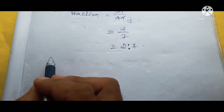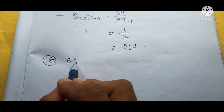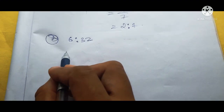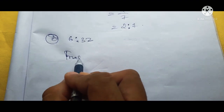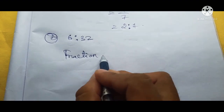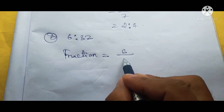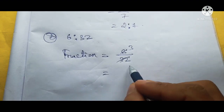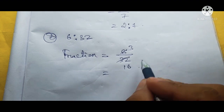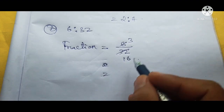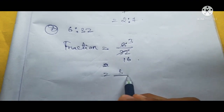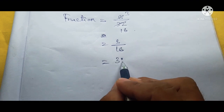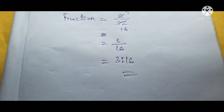Question 2B: 6 is to 32. We make it into a fraction: 6 by 32. Cancelling by 2 — 2 threes are 6, 2 sixteens are 32. We cannot cancel again, so the fraction is 3 by 16. Converting to a ratio gives 3 is to 16. This is the answer.